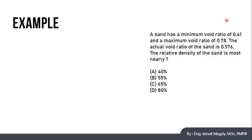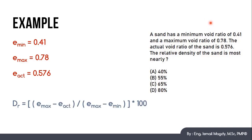We have E minimum of 0.41, E maximum of 0.78, E actual of 0.576, and we want the relative density. We know that the relative density formula is E max minus E actual over E max minus E minimum all multiplied by 100.